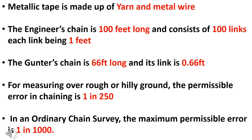The engineer's chain is 100 feet long and consists of 100 links, each link being 1 foot. The Gunter's chain is 66 feet long and each link length is 0.66 feet. The revenue chain is 33 feet long and has 16 links, and it is used for cadastral surveying.